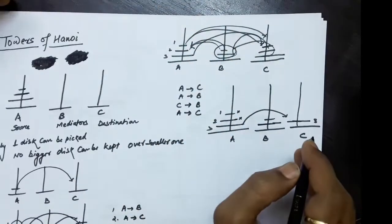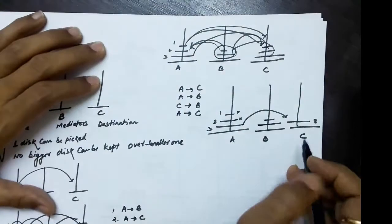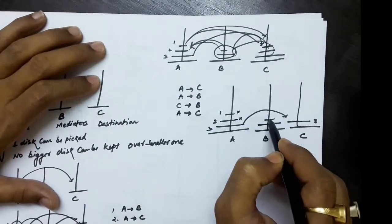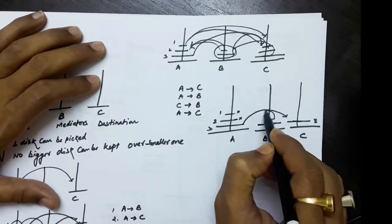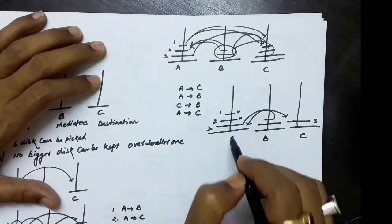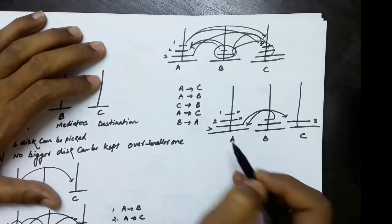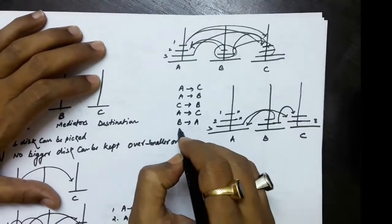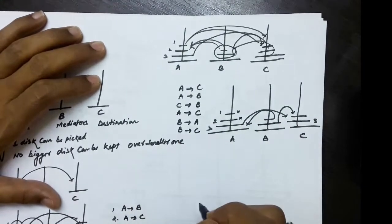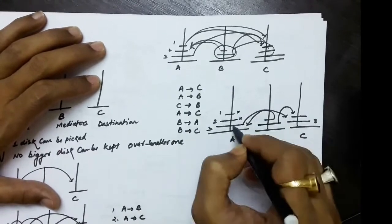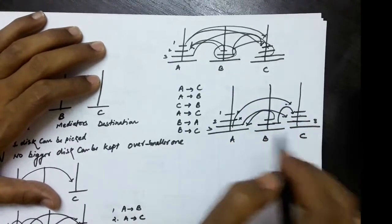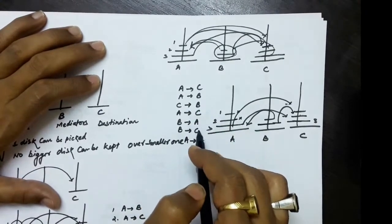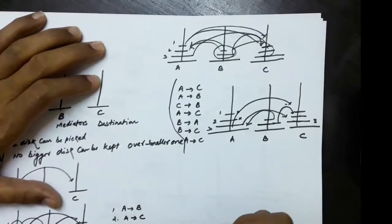Now A has no disk, B has two disks, and C has one disk. The arrangement that came to the mediator will be transferred to the destination. Disk 1 goes from B to A, then disk 2 goes from B to C, and the disk which came to A is transferred to C — that's A to C. So in total, seven movements have taken place.